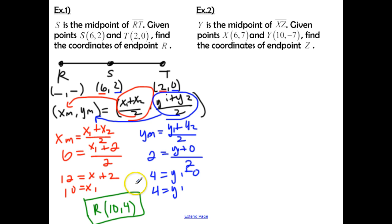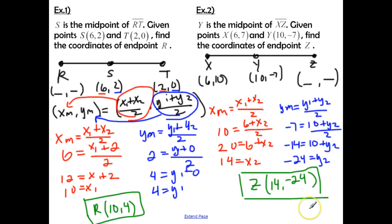Go ahead and press pause, try the next example, and check back with me when you're done. Hopefully you found that the coordinates for Z are 14 and negative 24. If that's not what you got, go ahead and pause, check your work with mine, and see where you might have made a mistake.